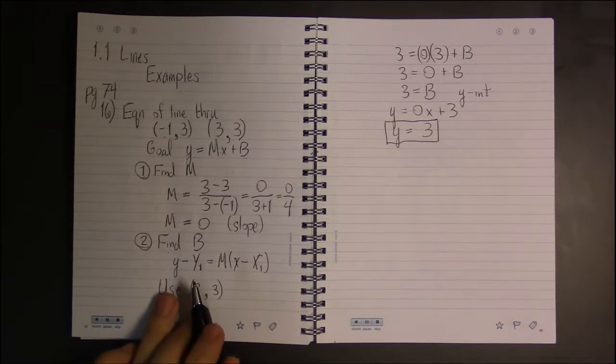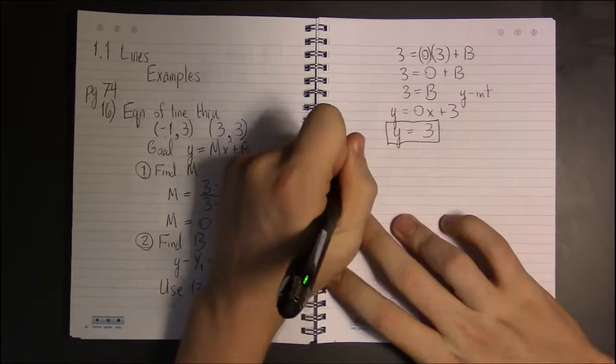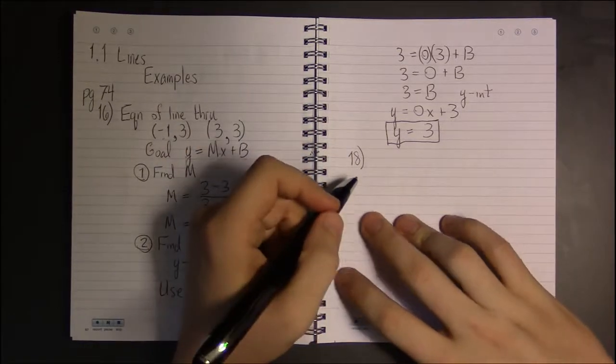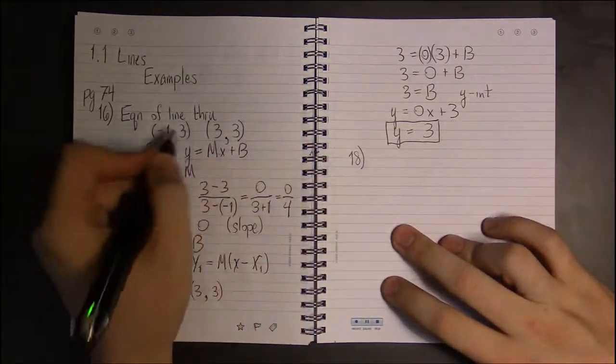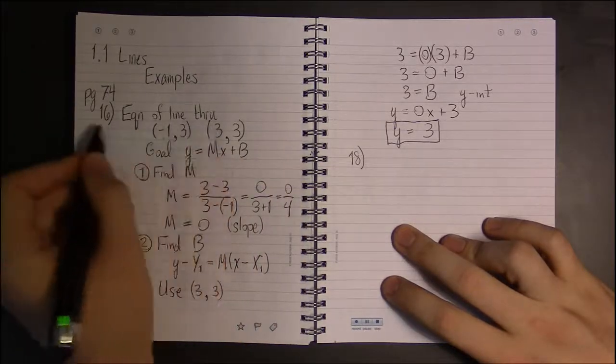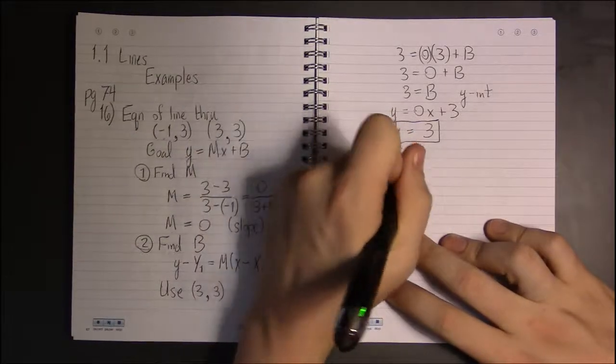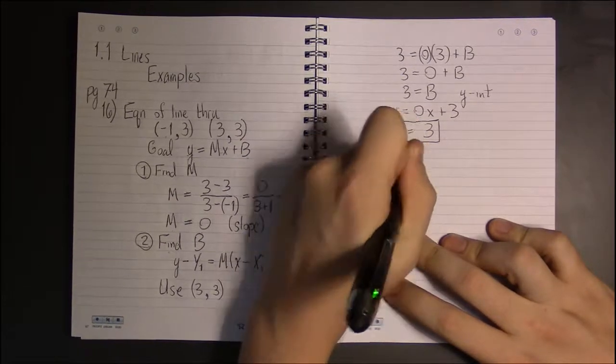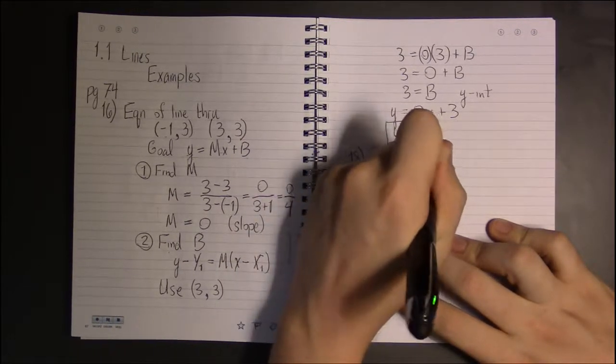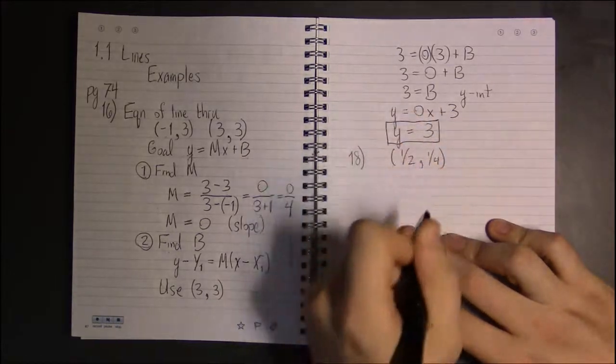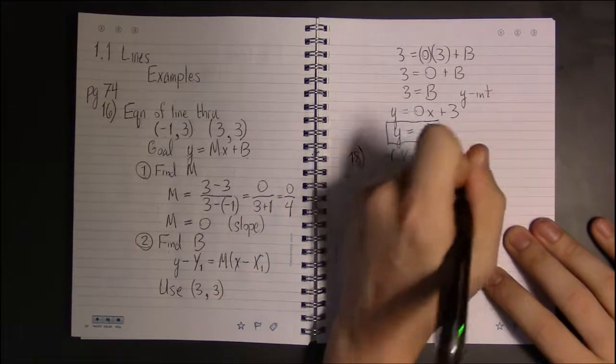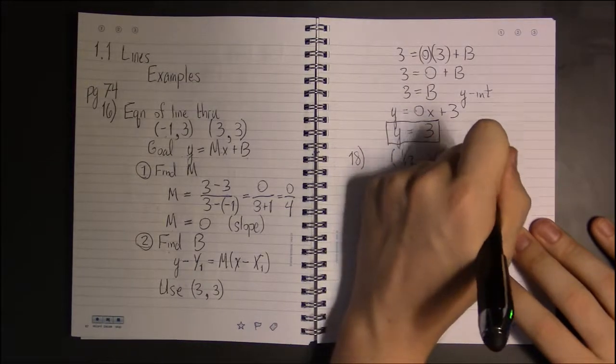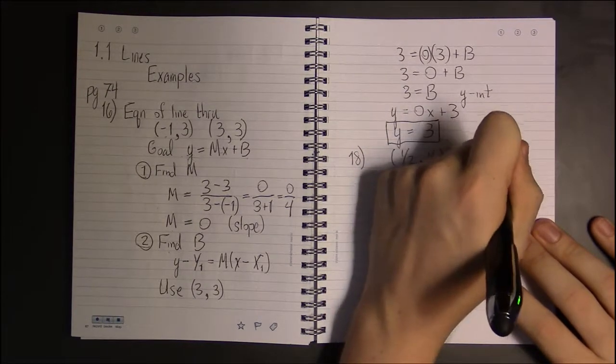All right, let's take a look at another problem, 18, on the same page with the same basic instructions. We're supposed to find the equation of the line that passes through the following two points. First point is 1/2, 1/4 and the second point is 0, 2.